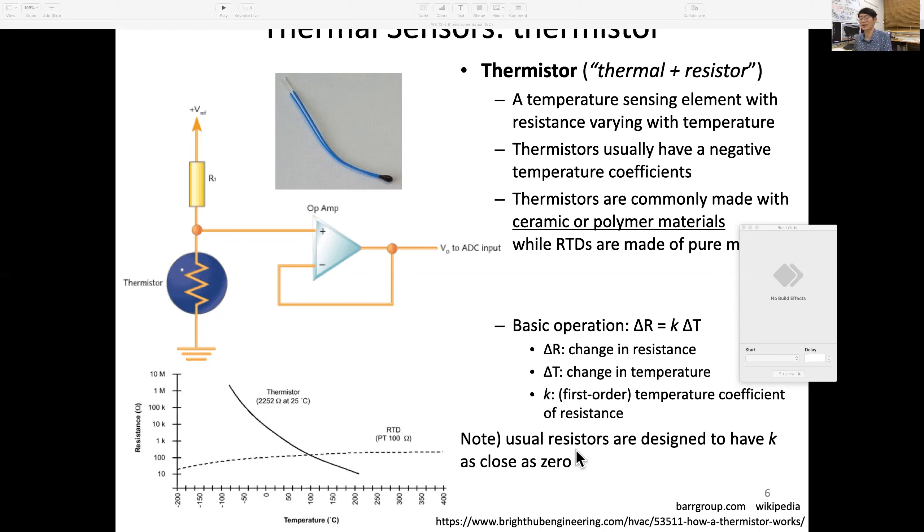Note that typical resistors, which you don't want changing resistance over time, are designed to have k as close to zero. But in thermal sensors or thermistors, you want k to be large so it can be more sensitive.